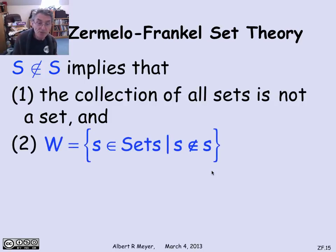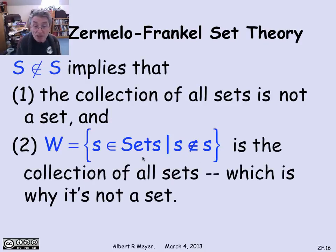The second thing it tells us is, remember the set w from Russell's paradox. W was the collection of those sets which are not members of themselves. Well, now we've just figured out that this is all sets, because no set is a member of itself. So the sets that are not members of themselves is everything. And that's why w is not a set and not a member of itself, which explains finally how the foundation axiom resolves the Russell paradox.